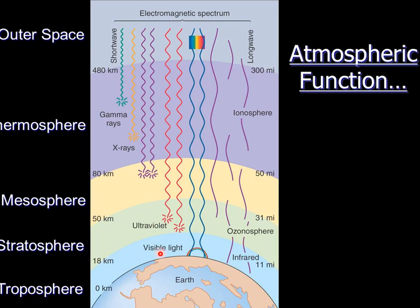Layers of the atmosphere: we'll start down here in the troposphere. This is where we live, where all our weather happens. As you get higher in the troposphere, temperatures cool off — when we go up to Flagstaff, for example — because there are fewer molecules. But up here in the stratosphere, you actually heat up, because you have ozone in the stratosphere. Ozone is three oxygen molecules combined, and it's very good at absorbing ultraviolet radiation. If this stuff wasn't here absorbing UV, nothing could live on the surface of our planet. But because ozone is absorbing this UV, you get warmer in the stratosphere.